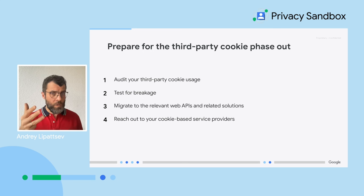Before we wrap, there's one more thing: for a limited time you will be able to request Chrome to continue allowing third-party cookie usage for your service or on your site. Be mindful that this is a last resort option, available if you have exhausted all others and need extra time to find a solution. To recap: to prepare for the deprecation of third-party cookies in Chrome, you need to audit your third-party cookie usage, test for breakage, migrate to the relevant web APIs and related solutions, and analyze your cookie-based third-party service providers. I'll now hand it over to Hane.